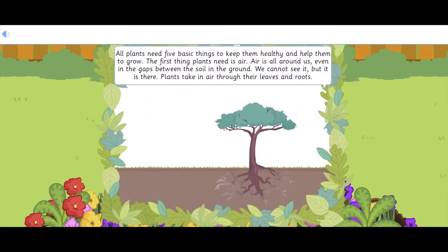All plants need five basic things to keep them healthy and help them to grow. The first thing plants need is air. Air is all around us, even in the gaps between the soil in the ground. We cannot see it, but it is there. Plants take in air through their leaves and roots.